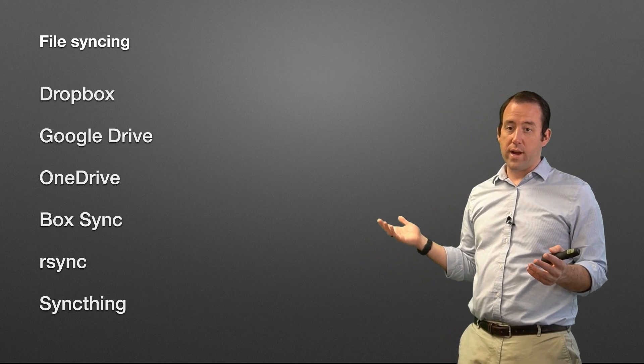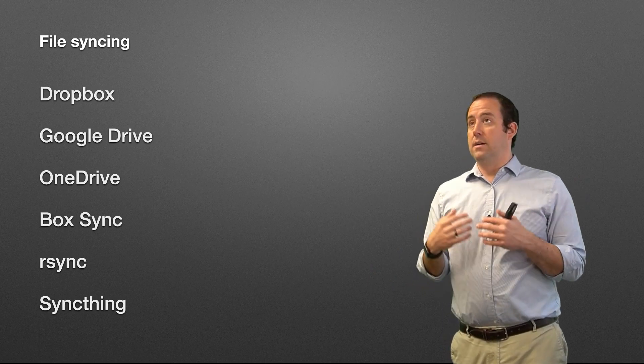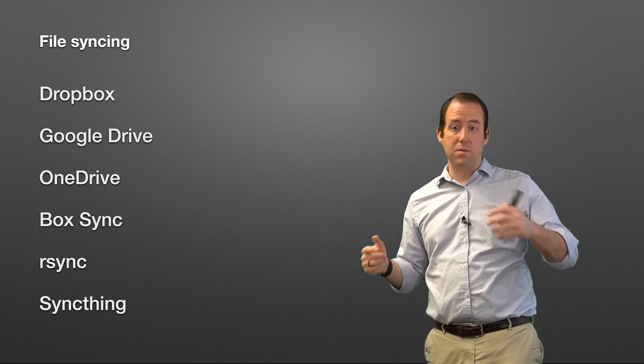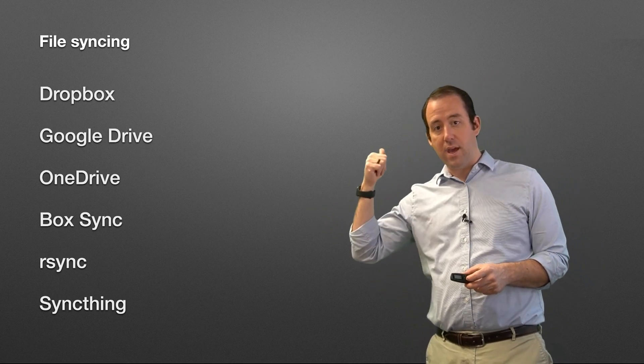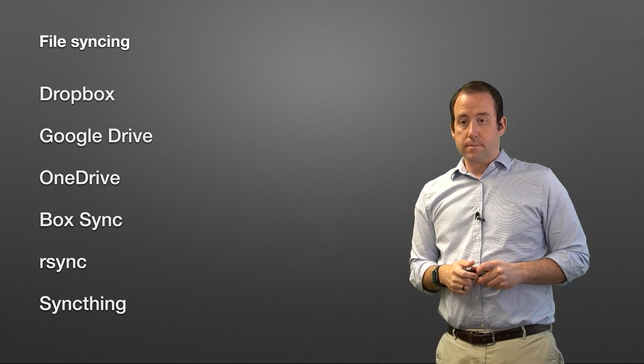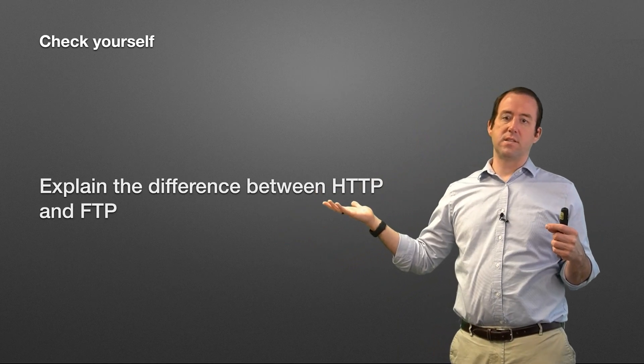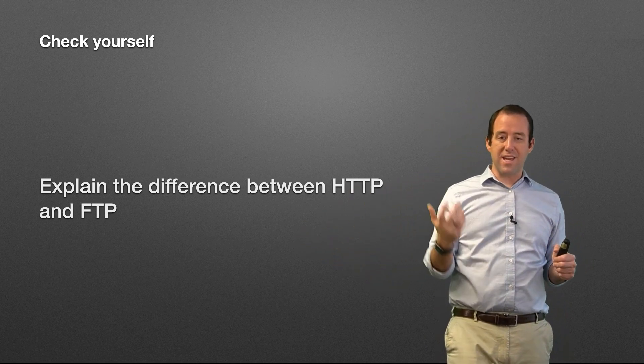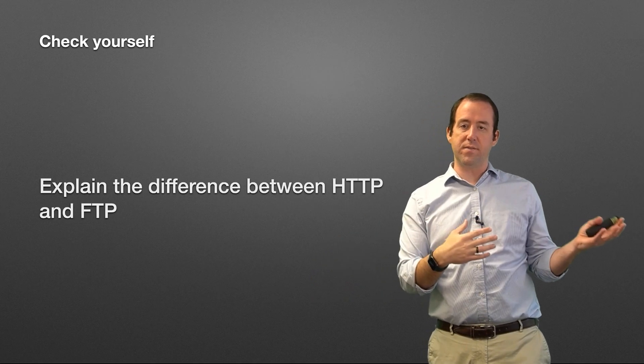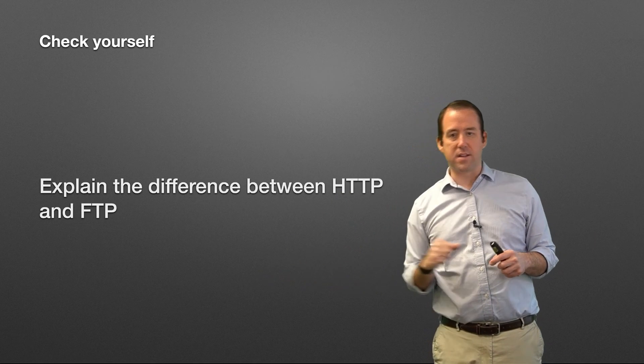Obviously we didn't cover all the ways you can send and receive files across the network — there are a lot. But these are the main ones that you, as data communications professionals, should be aware of because they're everywhere. You're going to see them and need to use them. Keep in mind FTP, SCP, HTTP, and these file syncing tools. One last self-check: explain the difference between HTTP and FTP, and make sure you understand what's going on — because they're very different, even though in some ways they're similar.